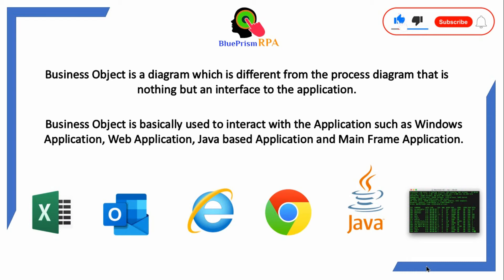Tasks like downloading reports or logging out from an application are performed in business objects, and these tasks are called actions. These actions are used in Process Studio to make a complete blueprint. Without interaction with the application, it is just a simple process used to perform calculations.